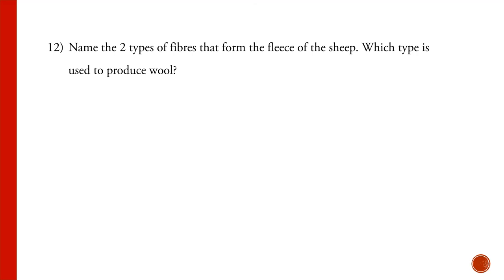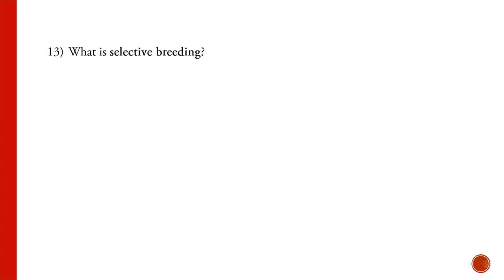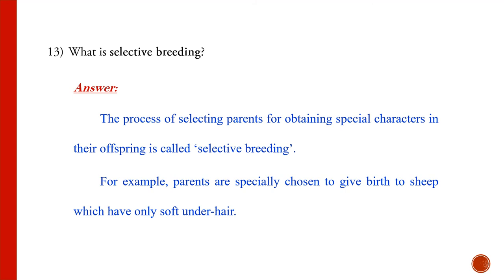The two types of fibers on the sheep's fleece are the coarse bed hair and the fine soft under-hair, which is close to the skin. The fine soft under-hair is used to produce wool. Selective breeding means selecting parents so that a special character is obtained in the offspring. For example, to get a sheep with only fine under-hair, you select parents that have only fine under-hair.